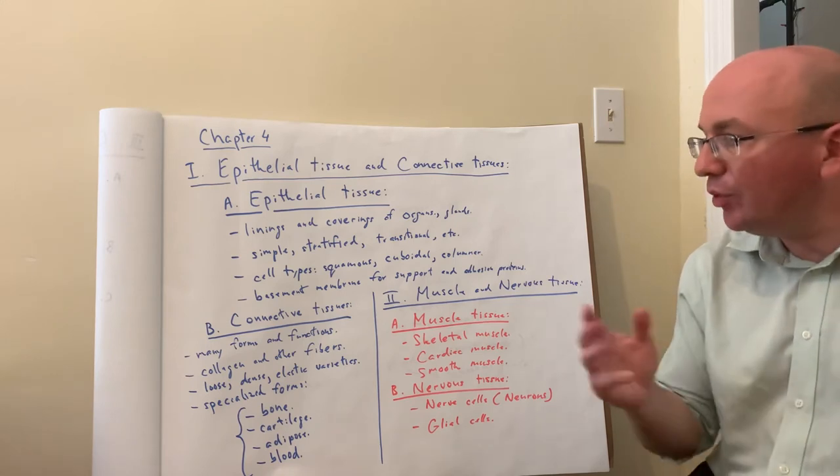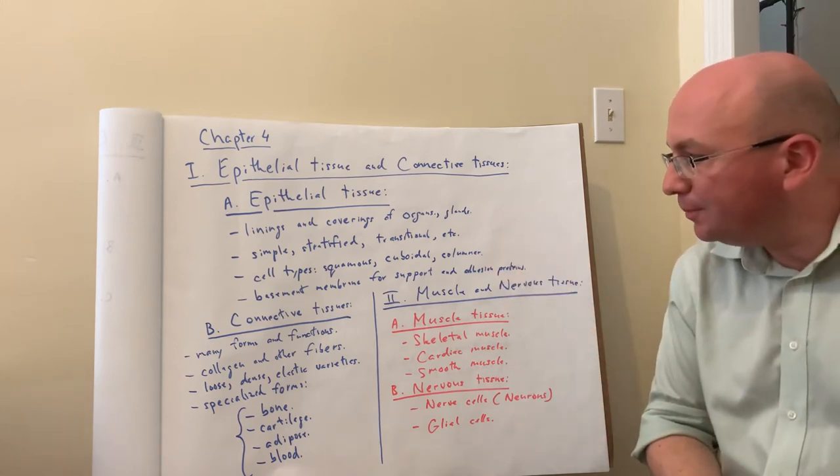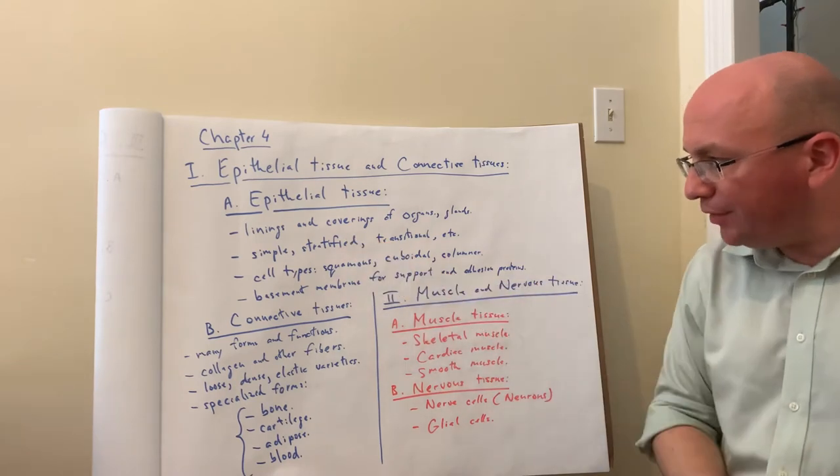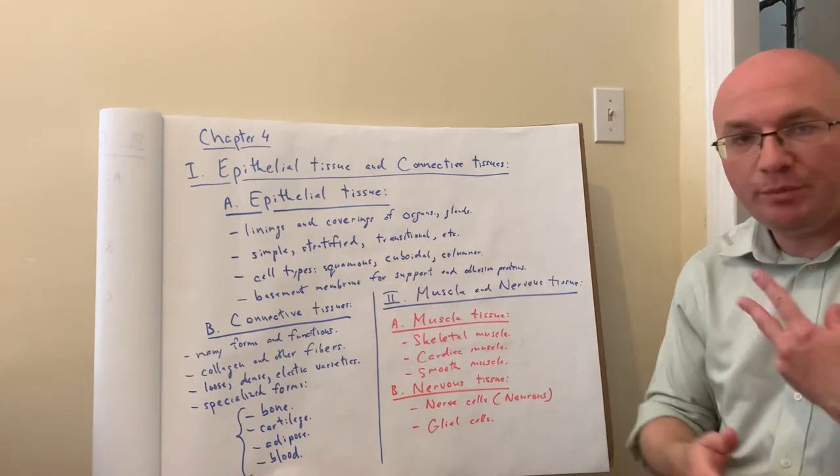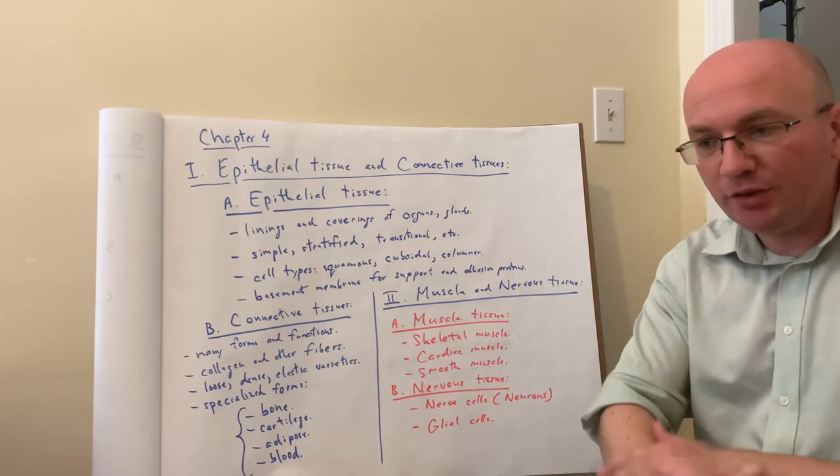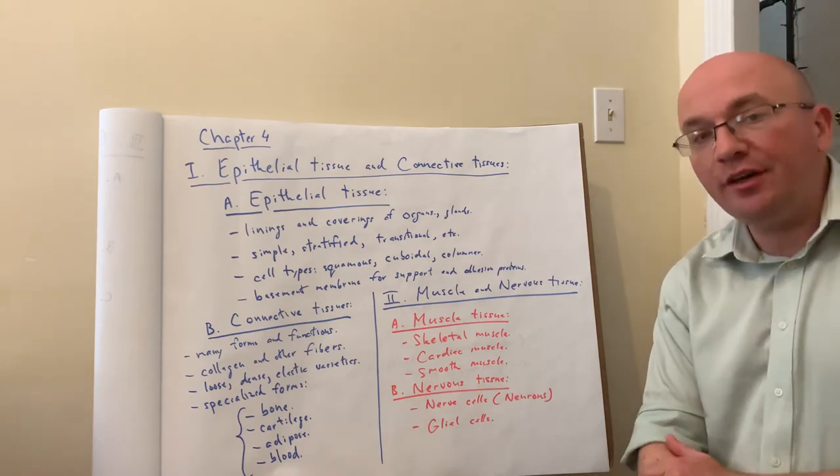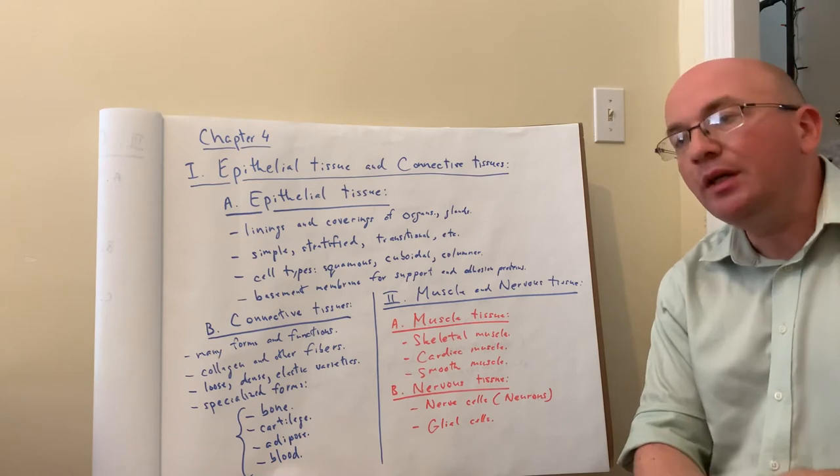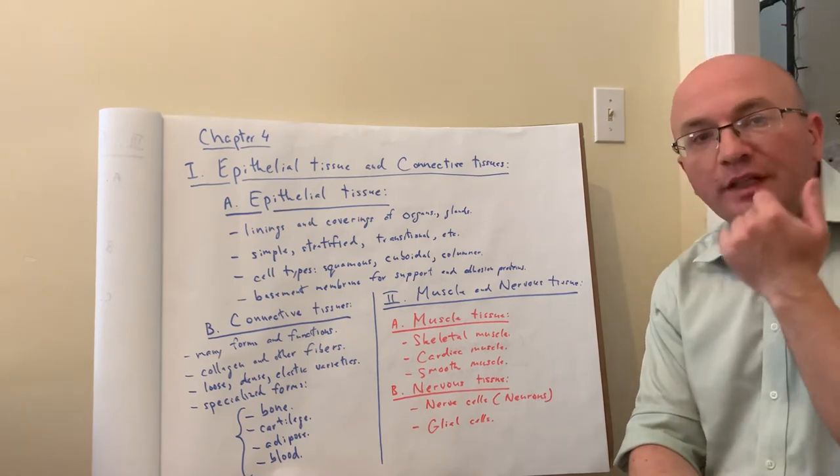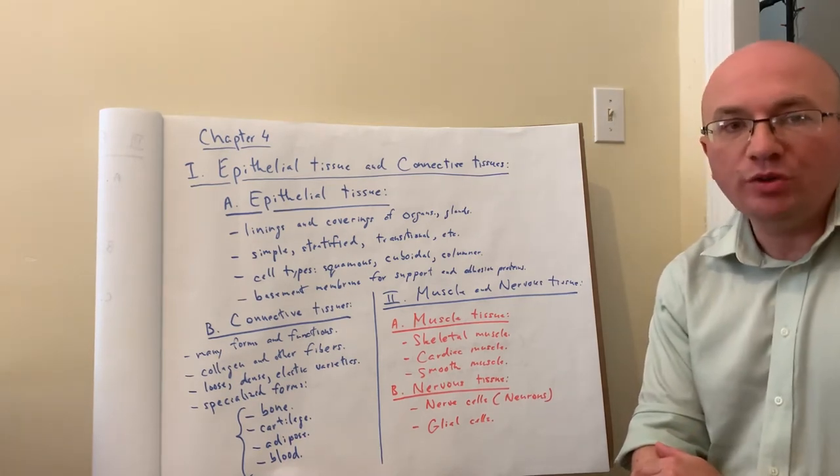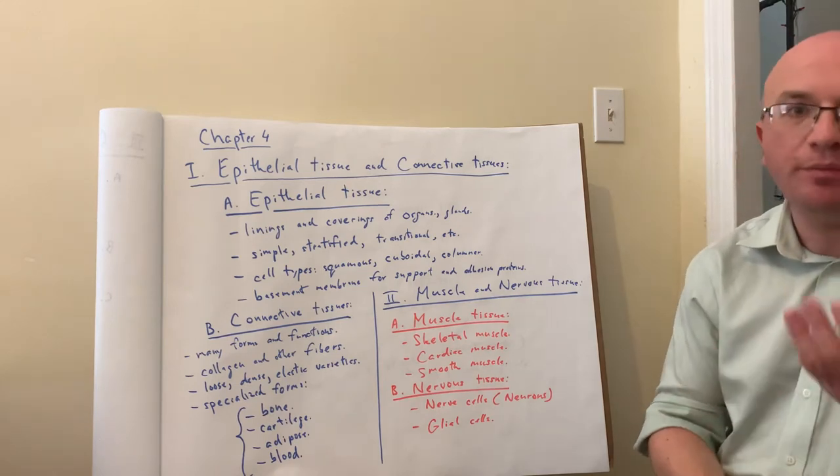Stratified squamous has two examples. One is skin, which is keratinized stratified squamous epithelium. Another example is the oral cavity in the mouth, also stratified squamous cells, except these are non-keratinized.